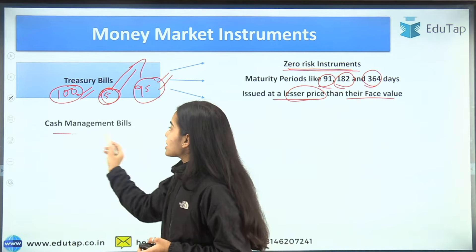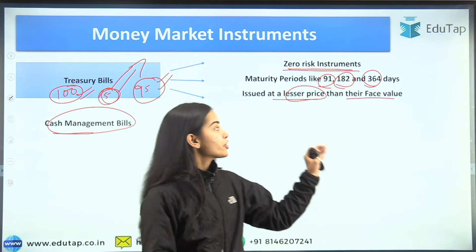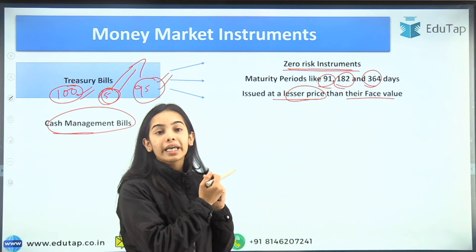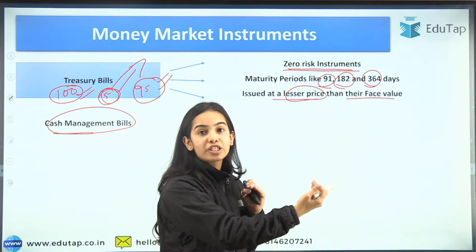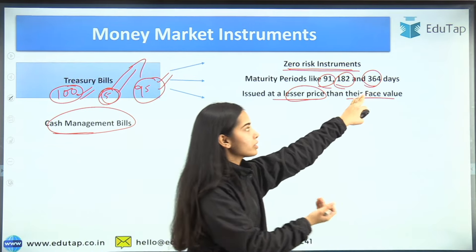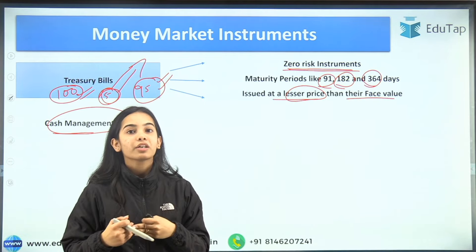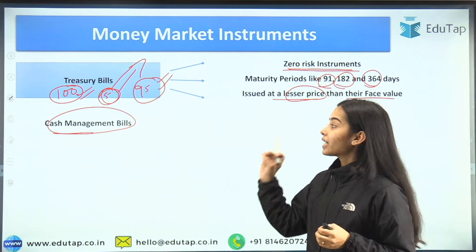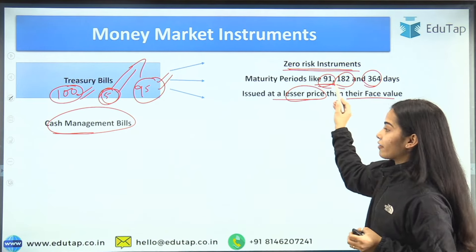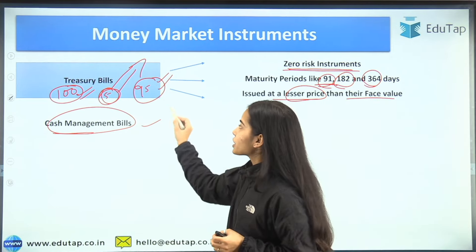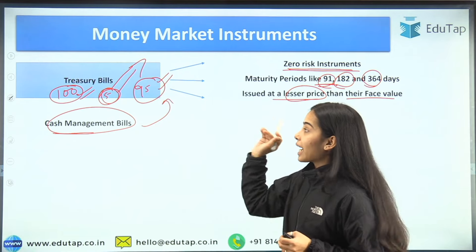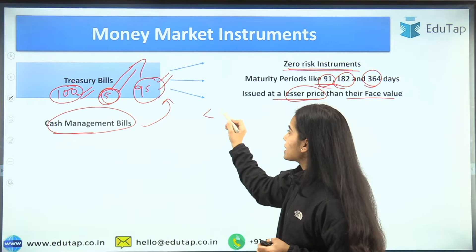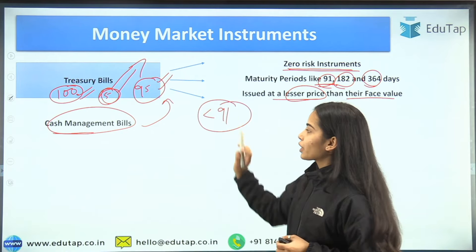Next is cash management bills. Treasury bills had a minimum maturity period of 91 days and a maximum of 364 days, but there was a need for instruments with maturity of less than that. So cash management bills are like treasury bills issued by the government, but they have a maturity period of less than 91 days.